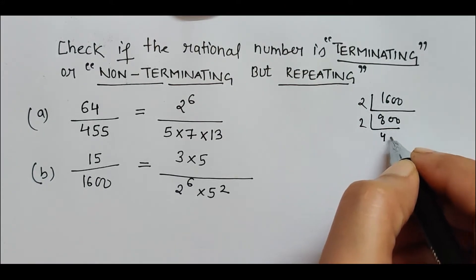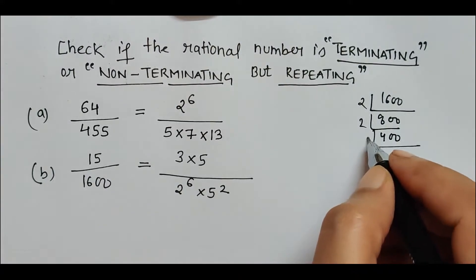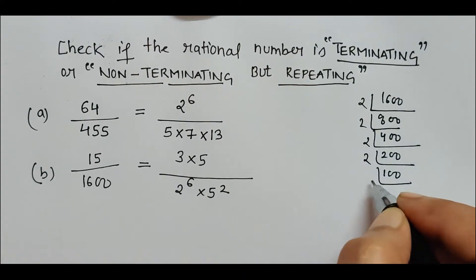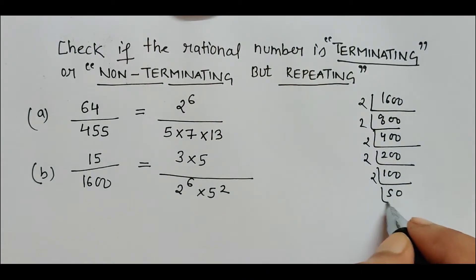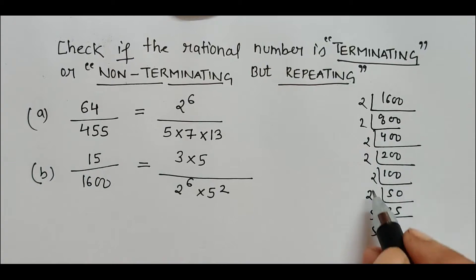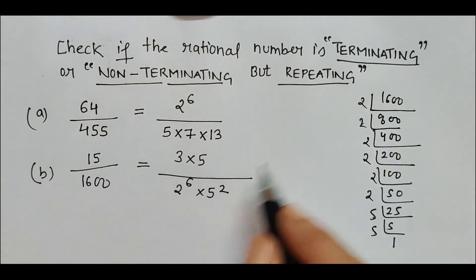Even this way you can find out the factors. If you see, the prime factors which we get are 5 squared and 2 to the power 6. So this is how 1600 can be written.